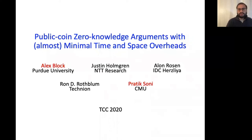Our main result is a new succinct zero-knowledge argument where the running time and, more importantly, the space of the prover is almost optimal. I am Pratik and this is joint work with Justin Holmgren, Alain Roseanne, Ron Rothblum, and Alex Bloch, who will take over for the second part of the talk.